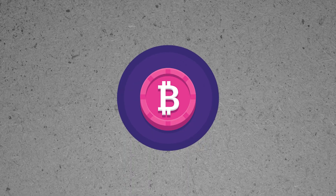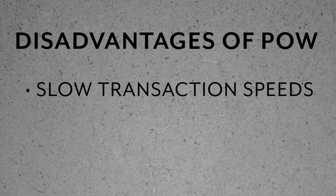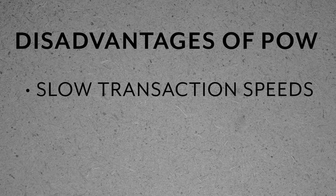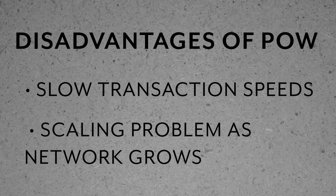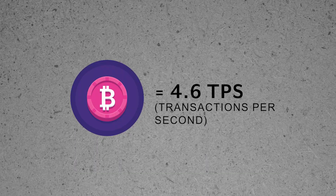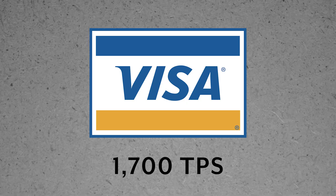To put that into perspective, Bitcoin uses as much energy as all of Switzerland, and it is only going up as Bitcoin is adopted more and more. Second, due to the difficulty of solving mathematical equations, transaction speeds are often slow and expensive. Bitcoin currently has a transaction speed of 4.6 TPS, while Ethereum — also running on a proof of work system — has a transaction speed of around 25 TPS. In comparison, the credit card company Visa does around 1,700 TPS.